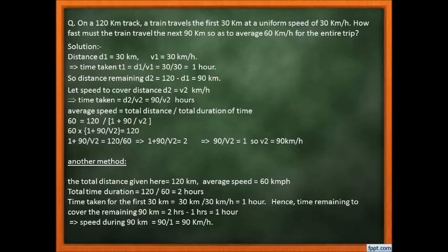So the answer is V2 = 90 km per hour. Both methods give the same result. Now let's move to the next slide.